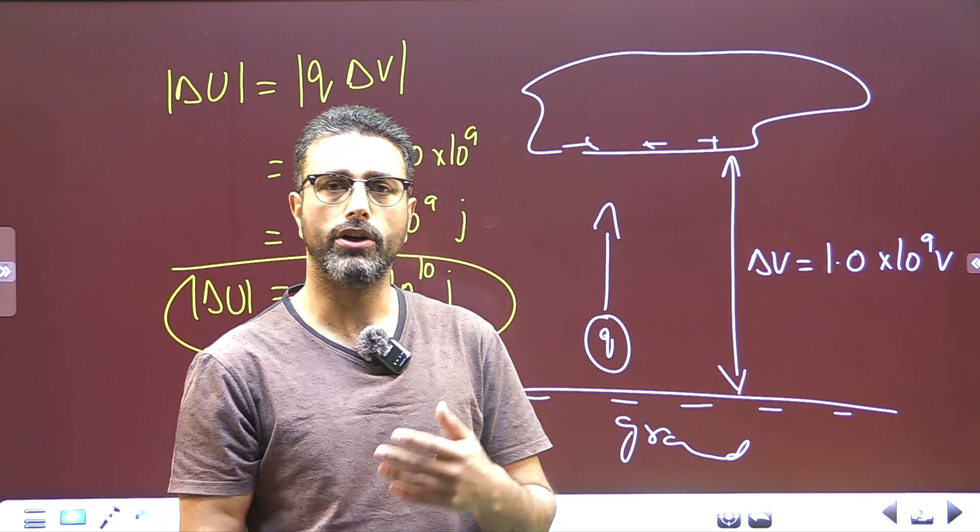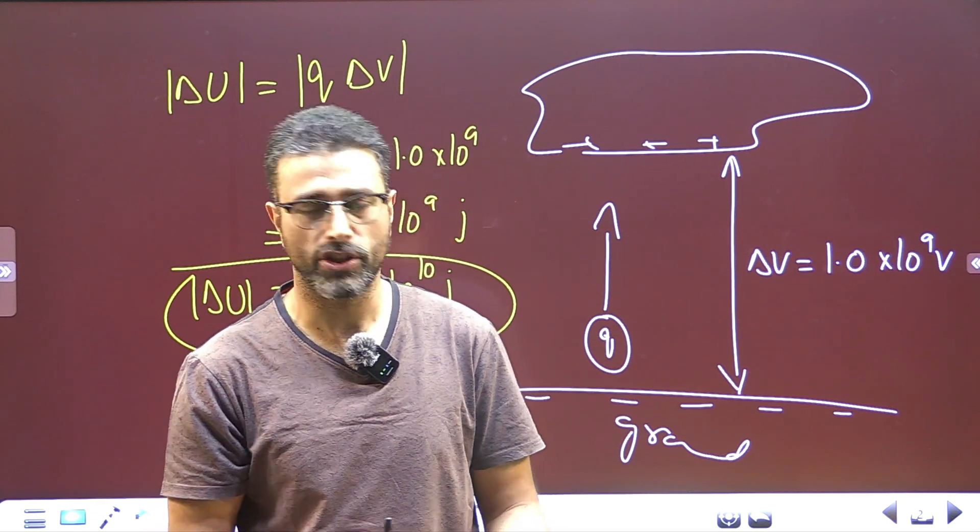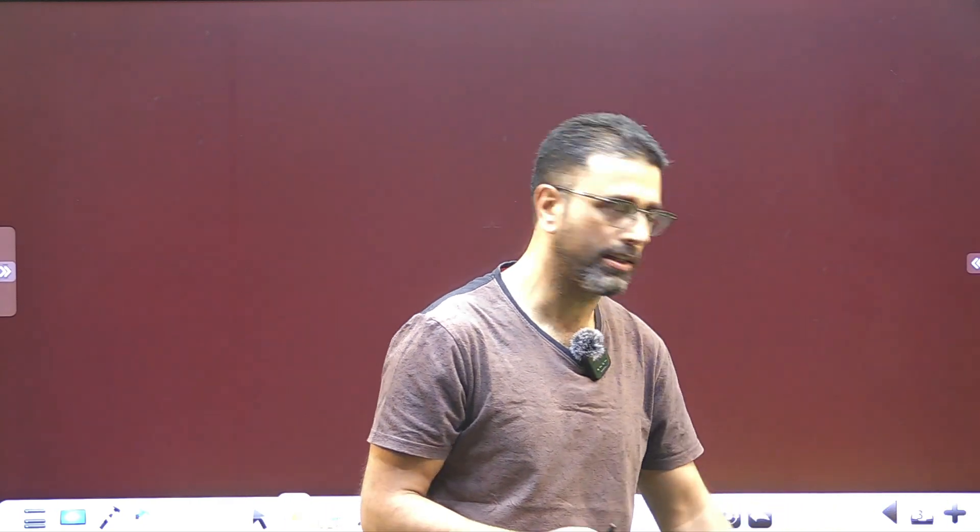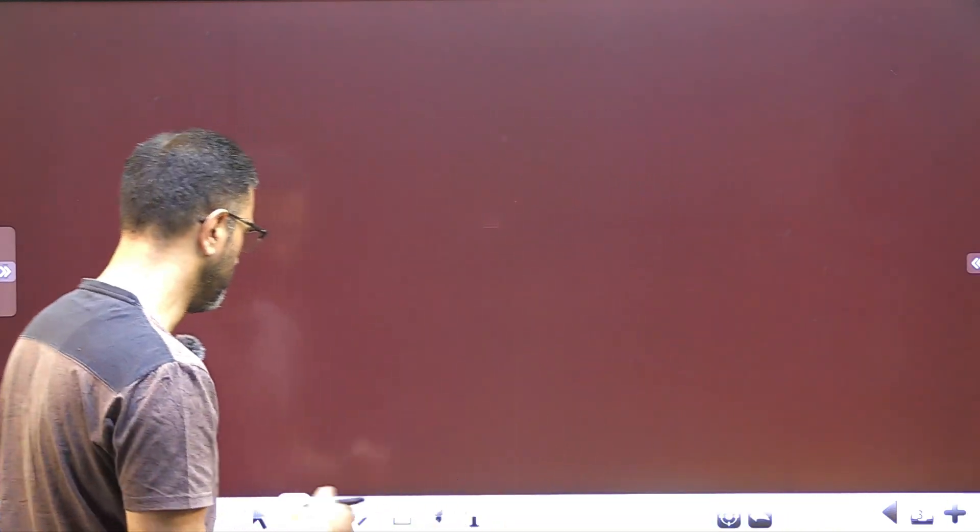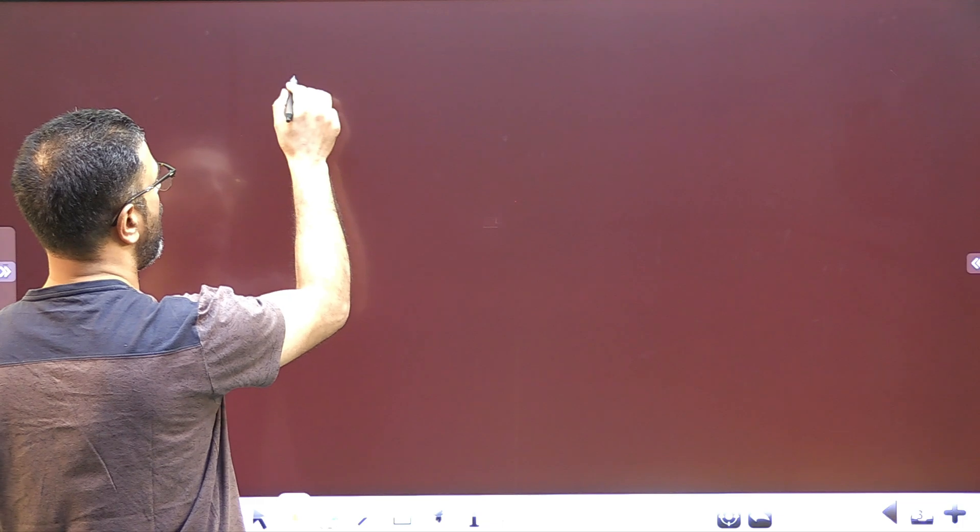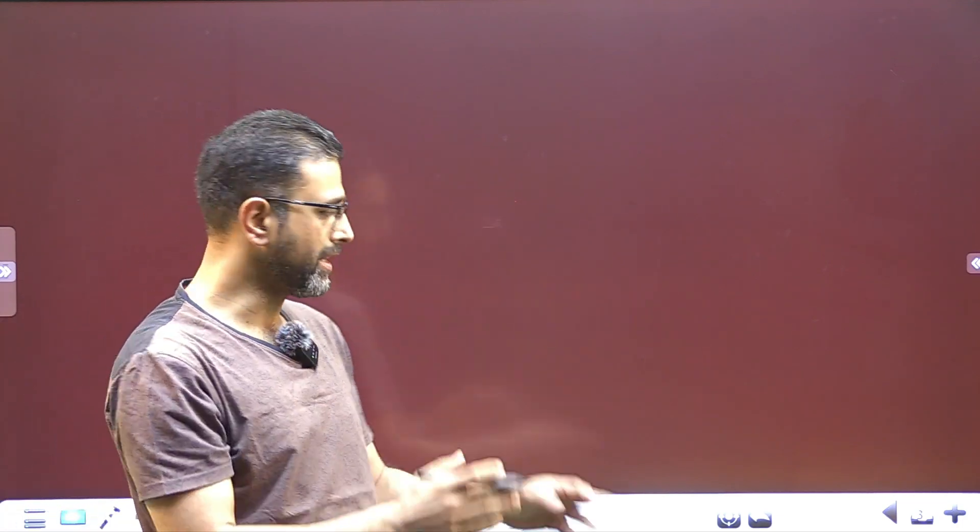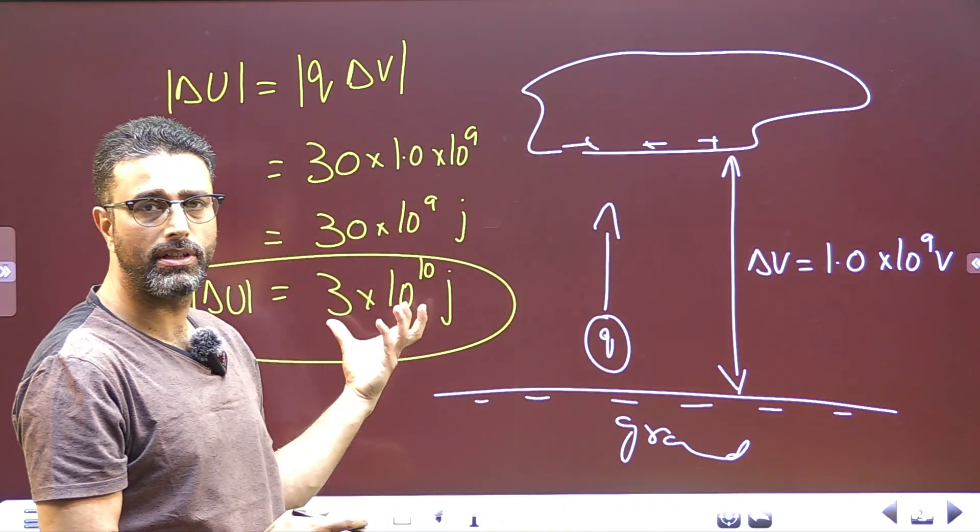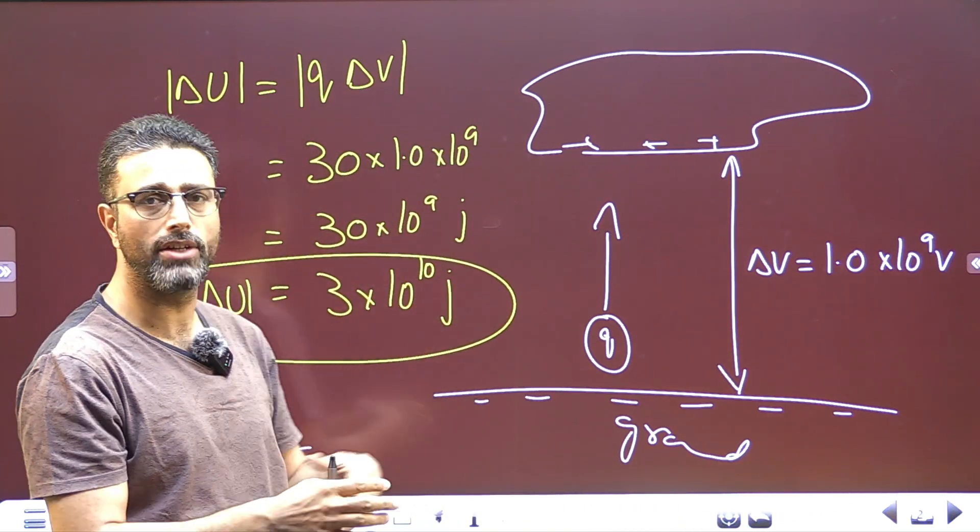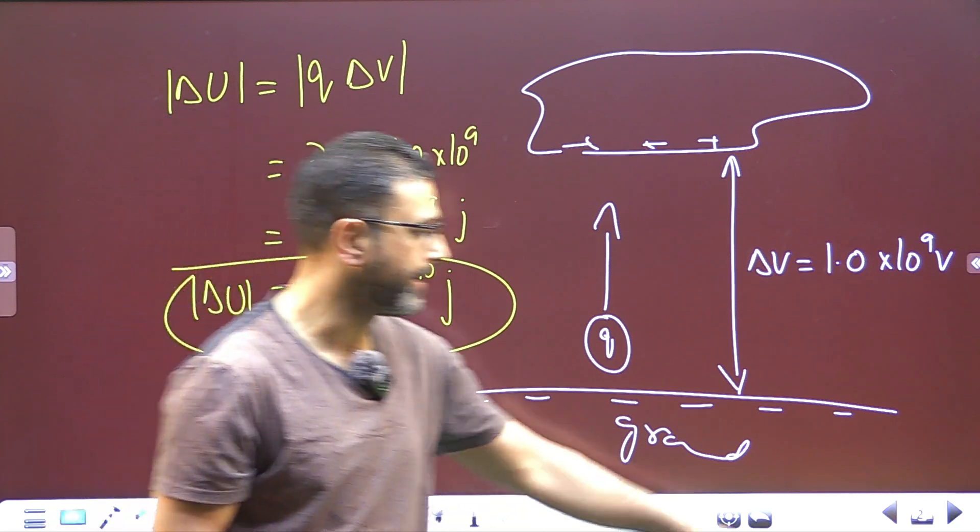Now, if the same energy is utilized to increase the speed of a car, a thousand kg car, to accelerate it, what will be its final speed? So, simple, all that energy will be transferred to kinetic energy. If all this energy is utilized to accelerate the car, then all this energy will go to the car in the form of kinetic energy.